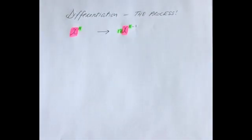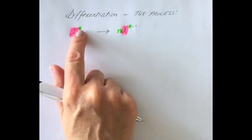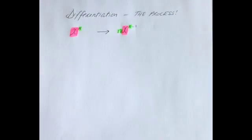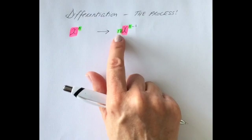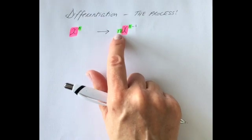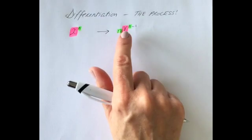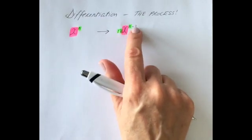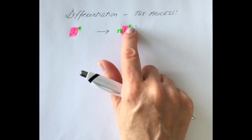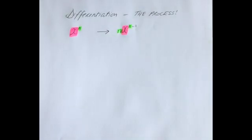Basically, when you have an x term and a power, to differentiate it, what you do is you bring down the power, keep your x, and then you take one away from that original power. Let's jump into lots of examples so we can really see this process at play.